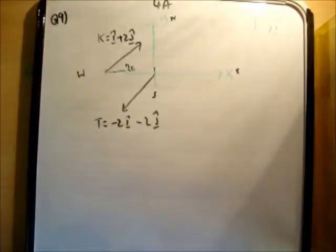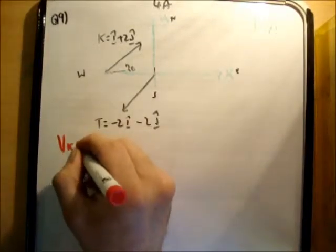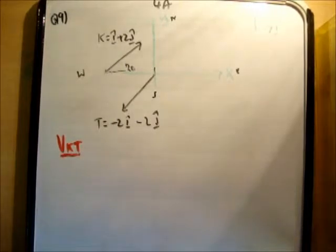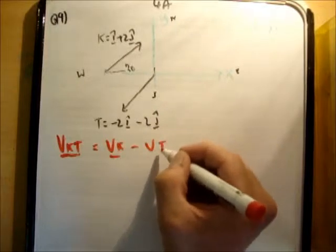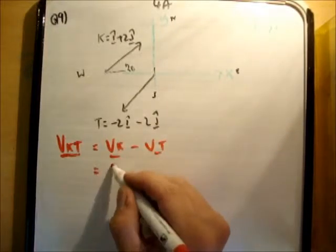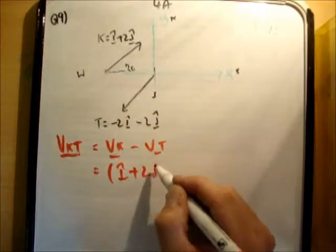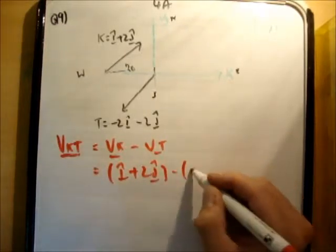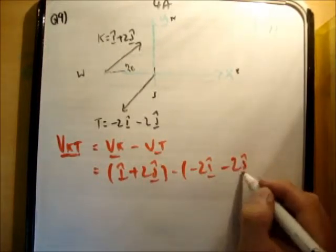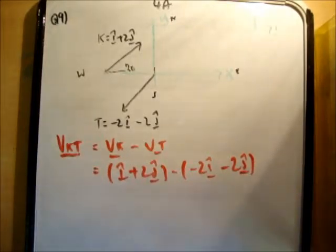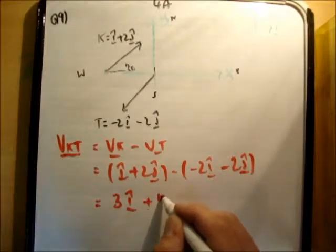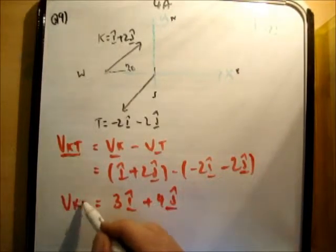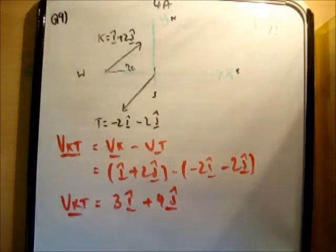So we're asked to find the velocity of k relative to t. So we're finding vk-t. This means that t considers itself stationary. What is k doing? So it's vk minus vt. And that's equal to i-hat plus 2j-hat minus negative 2i-hat minus 2j-hat. Just be careful with your brackets and your signs. And this turns out to be 3i-hat plus 4j-hat. So that was pretty straightforward.